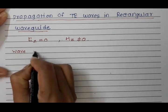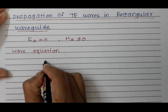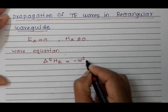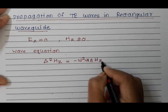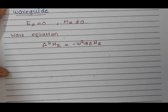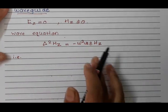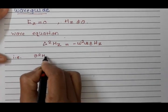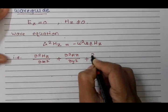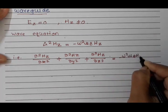Now let us recall the wave equation which we have seen in the very first session. I am interested in HZ, that's why I will write the wave equation for HZ. So del squared HZ is equal to minus omega squared mu epsilon HZ. This means del squared HZ dx squared plus del squared HZ dy squared plus del squared HZ dz squared is equal to minus omega squared mu epsilon HZ.